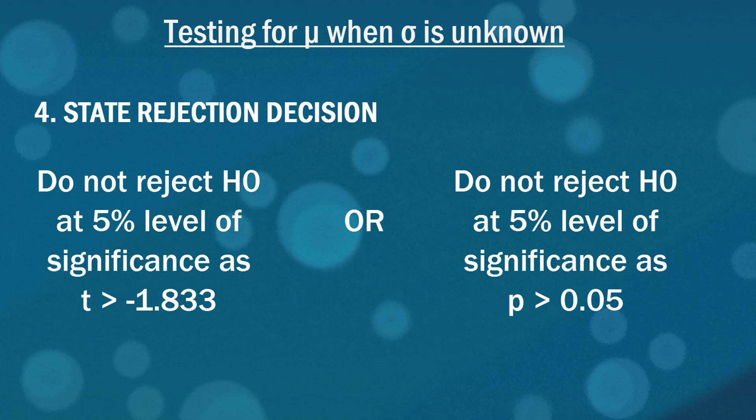We state our rejection decision which is step 4. Using either method we could say that we did not reject the null hypothesis at the 5% level as t is greater than negative 1.833 so it's not in the rejection region. Or alternatively we can talk about the p-value and say that again we don't reject it as the p-value is greater than 0.05.